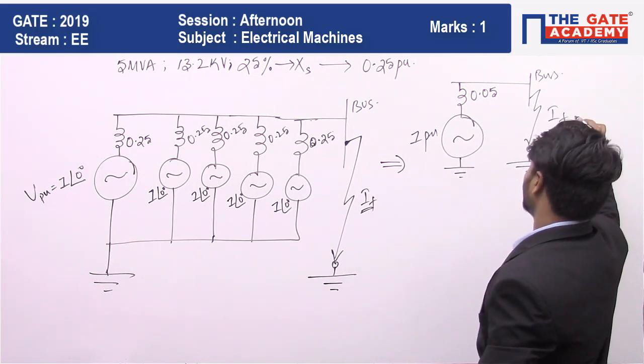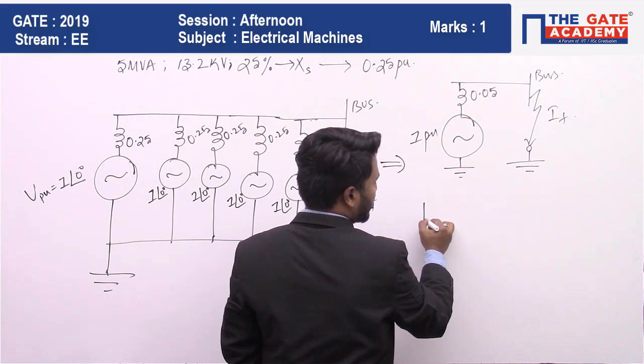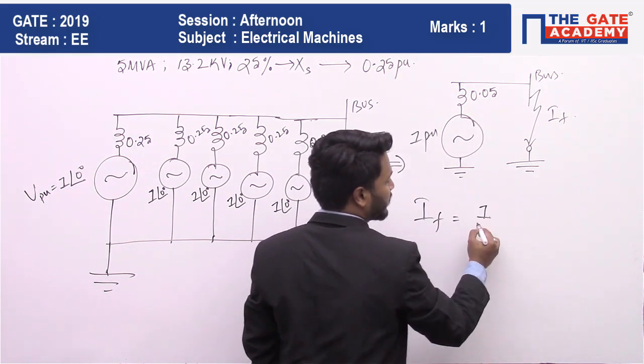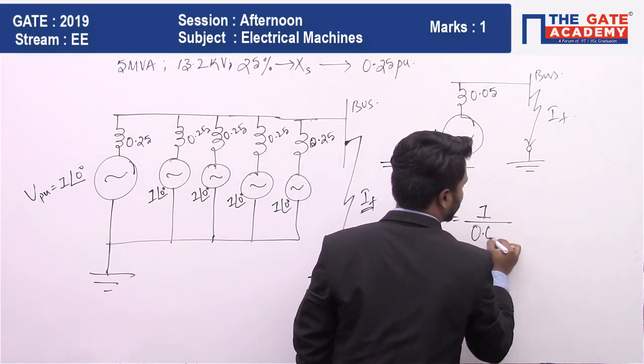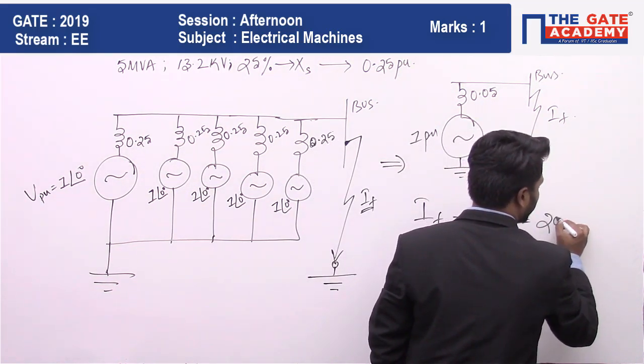So if you look at the circuit diagram, you can get If, the fault current, is equal to 1 per unit divided by 0.05, which will give you 20 per unit.